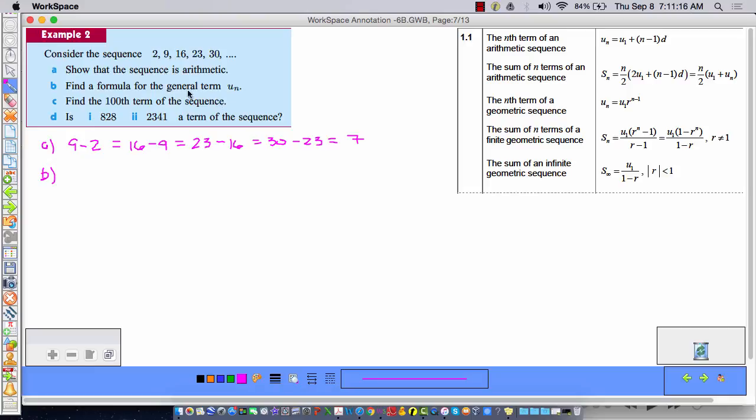Part B, find a formula for the general term U sub n. So we've already determined there that it's arithmetic, so we can find the general term using the formula that they gave us. So U sub n is equal to U sub 1 plus N minus 1 times d. So in order to find the general term, all I need is U sub 1 and d. So U sub n is equal to, the first term is 2, plus N minus 1 times the common difference d, which is 7. And I can simplify that, plus seven N minus seven using the distributive property. So my general term turns out to be 7N minus five. Easy peasy.